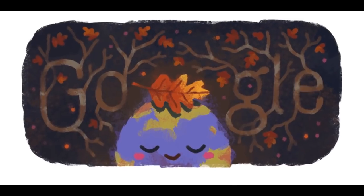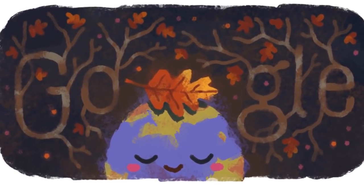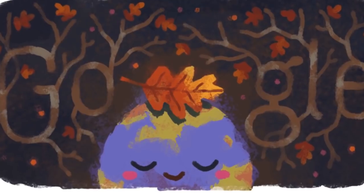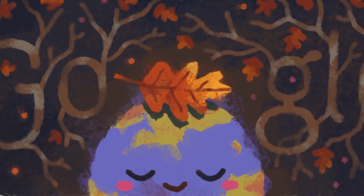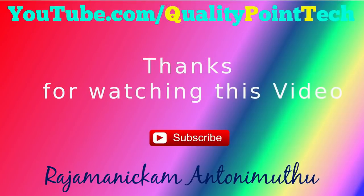Google is showing this another doodle in the Southern Hemisphere for marking the fall equinox, i.e., the first day of fall 2019. The equinoxes are the only times when the solar terminator is perpendicular to the equator. As a result, the Northern and Southern Hemisphere are equally illuminated.